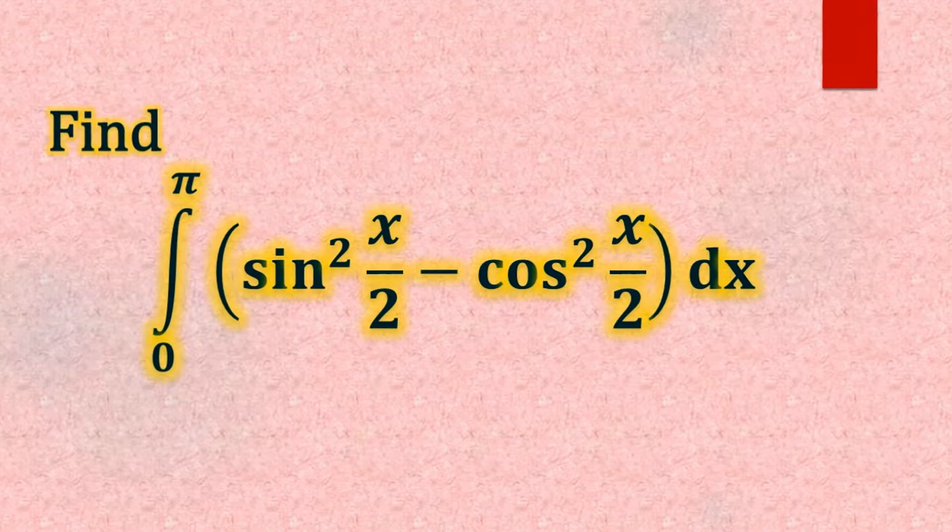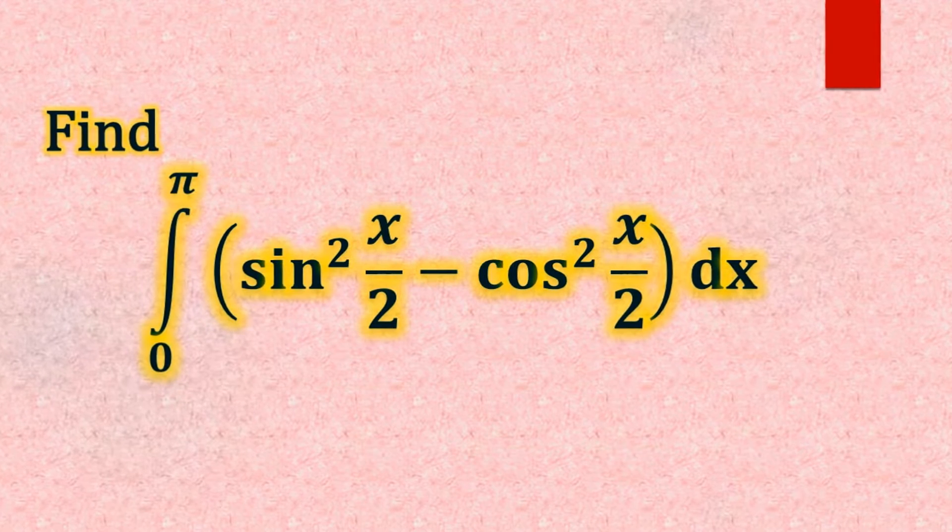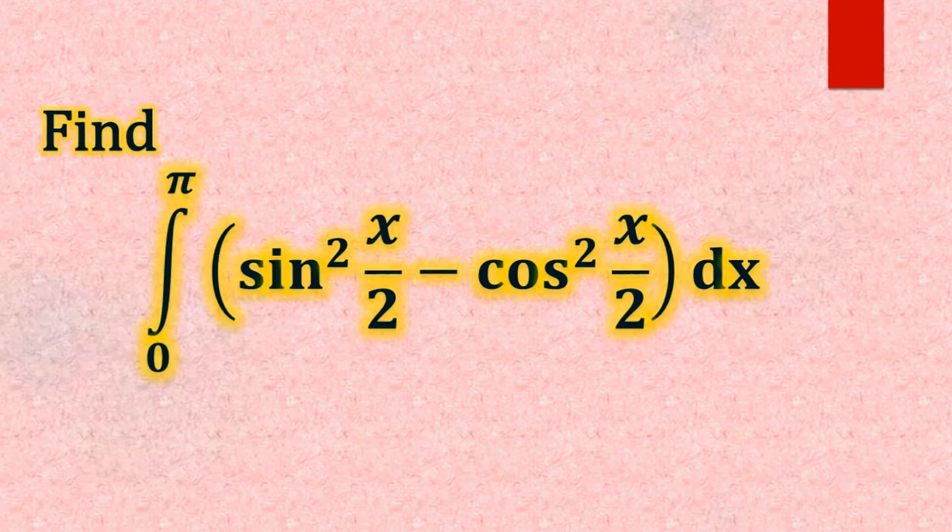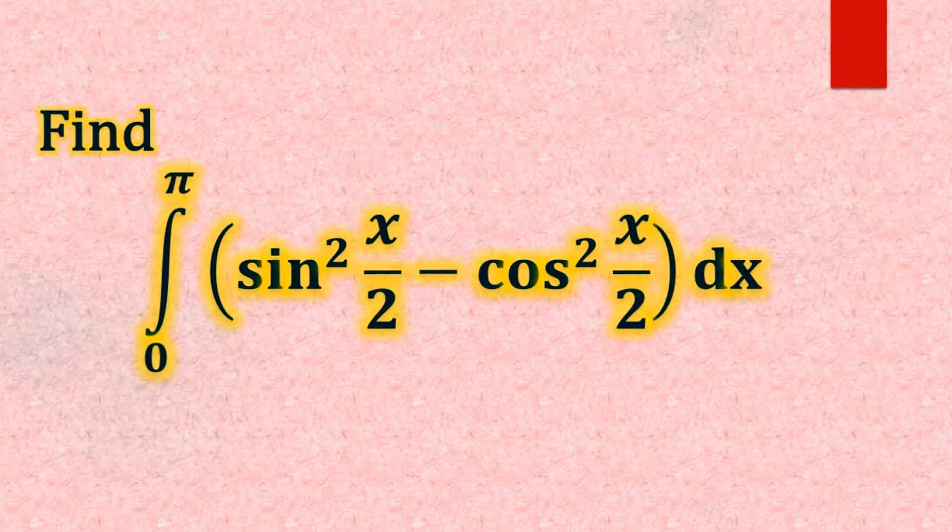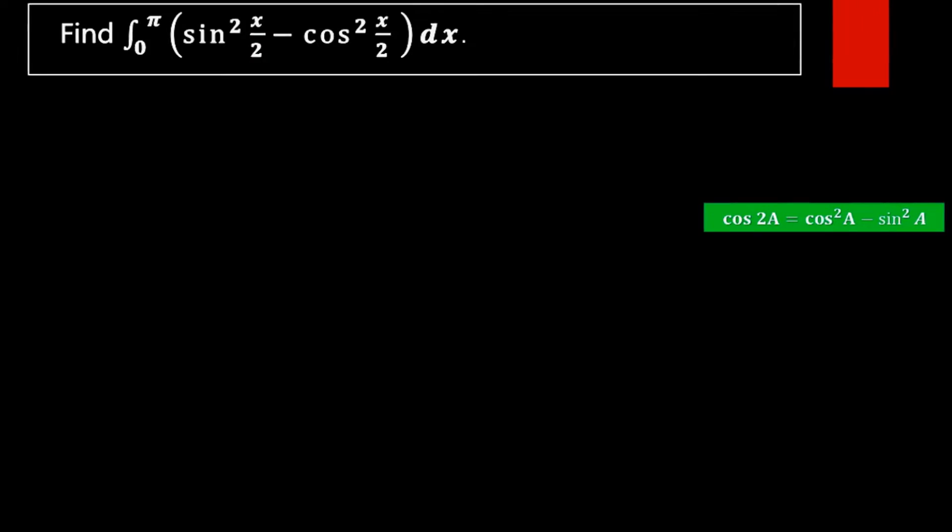Find integral 0 to pi sin square x by 2 minus cos square x by 2 dx. So here we have to find the value of this integral. Note that this function is not in an integrable form.